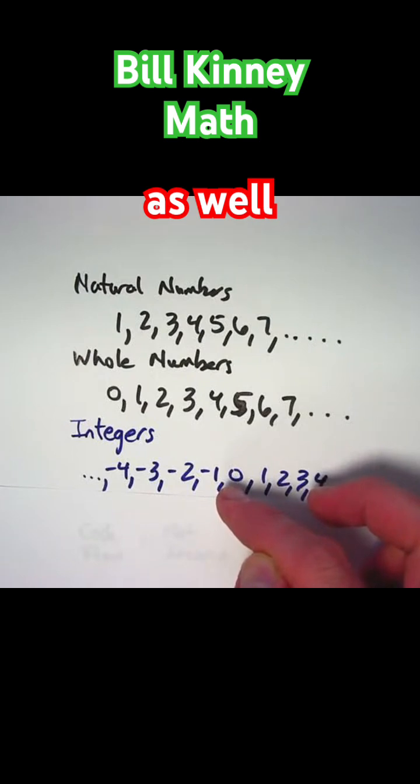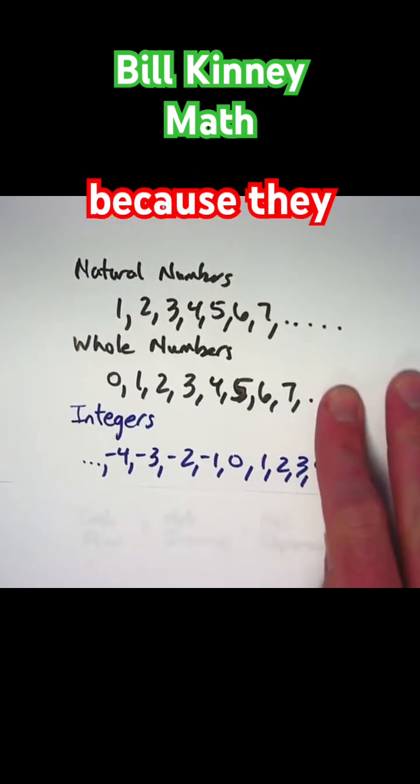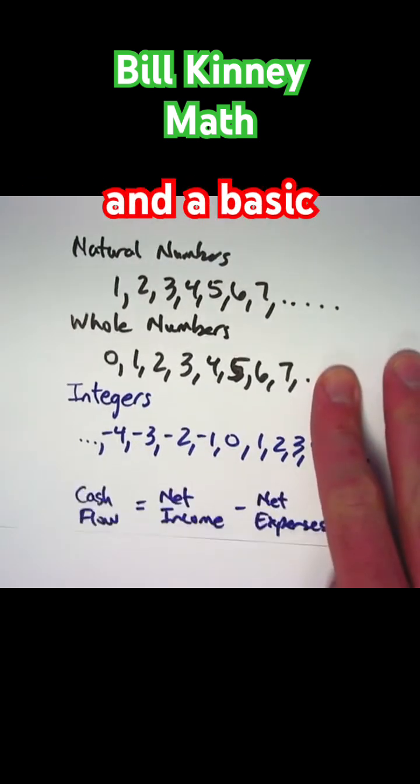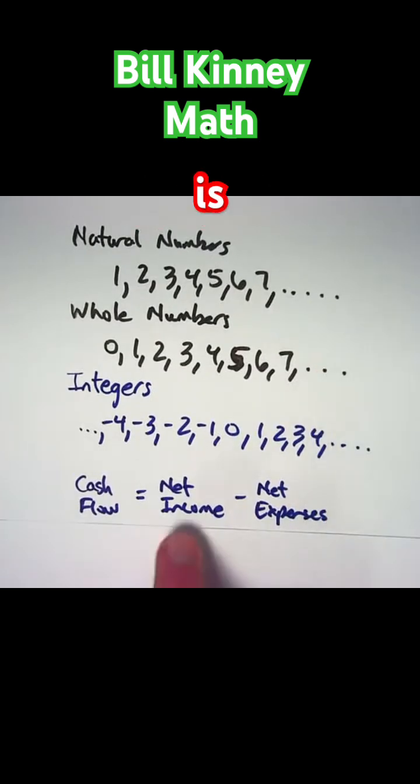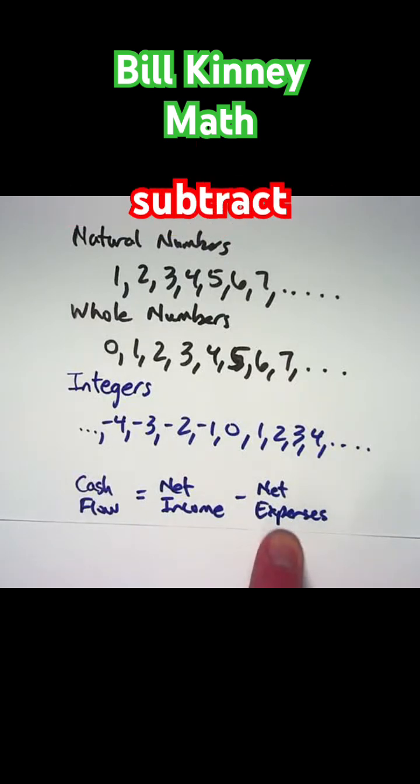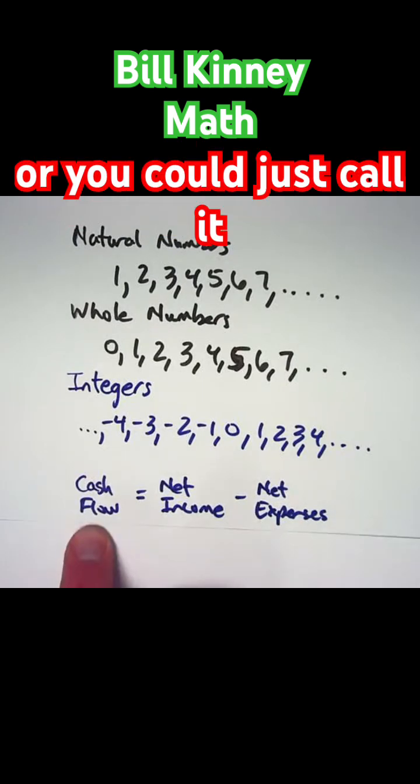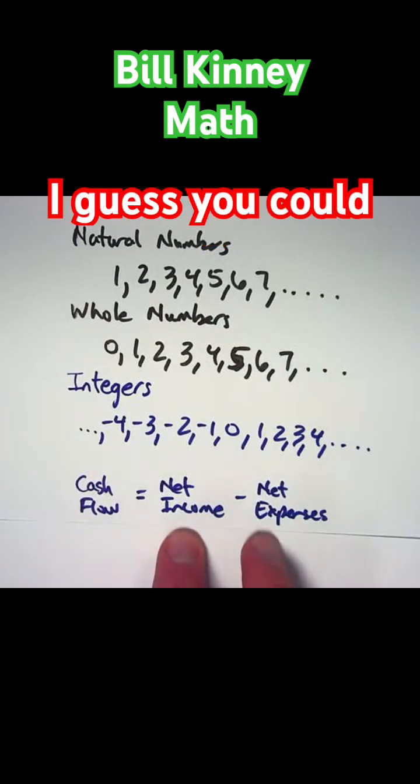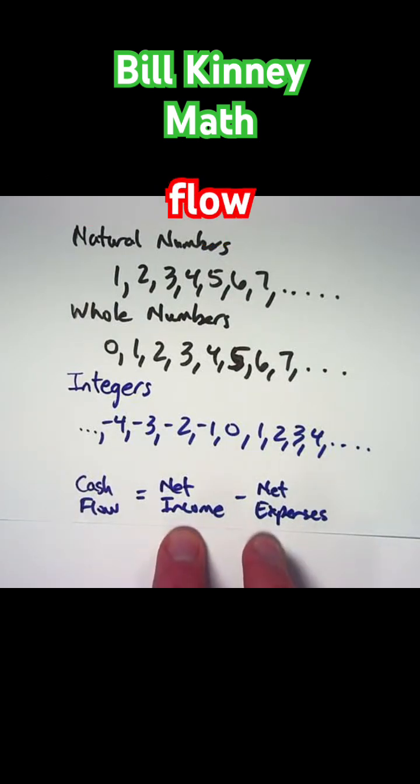accepted as well. They finally gained acceptance because they do have applications, and a basic application of negative numbers is cash flow. If you take your net income after taxes and subtract your net expenses, or you can just call it expenses, you call that your cash flow. It's convenient to treat it this way in all cases.